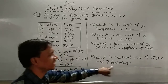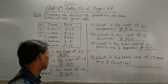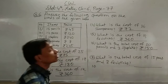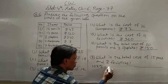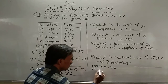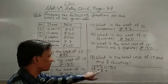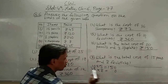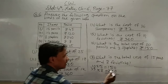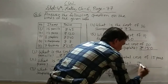After that next question: What is the total cost of 15 pens and 8 fevisticks? 15 pens की cost क्या होगी? एक pen का cost 10 rupees, तो 15 pens: 10 into 15 = 150 rupees। और 8 fevisticks की cost: 8 into 35 = 280 rupees। Add करो: 150 + 280 = 430 rupees। Answer: 430 rupees।